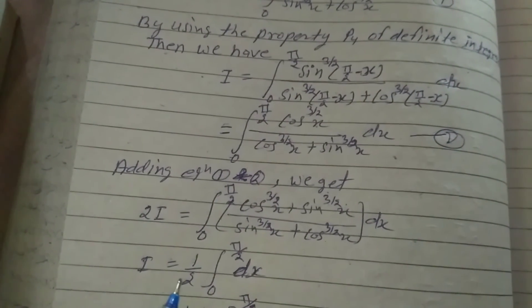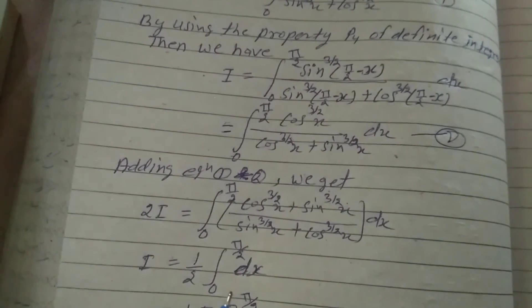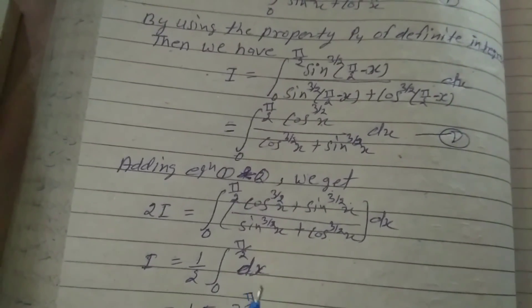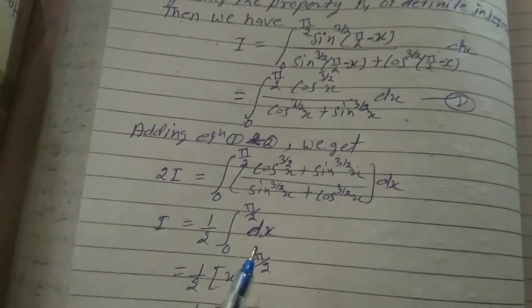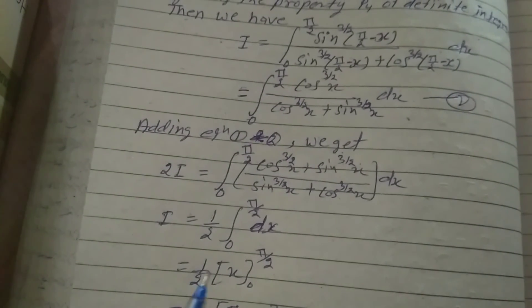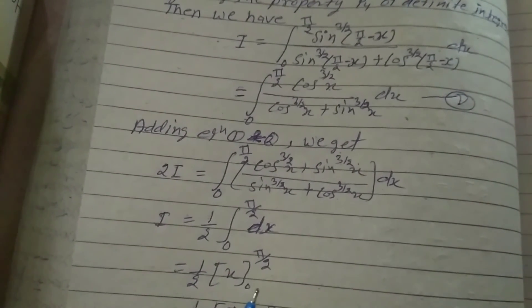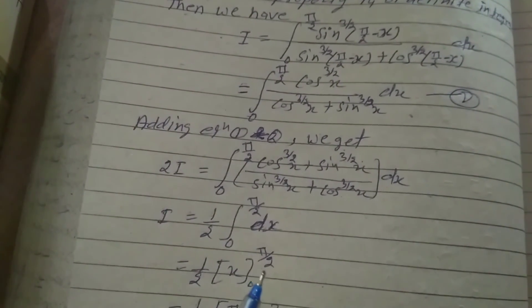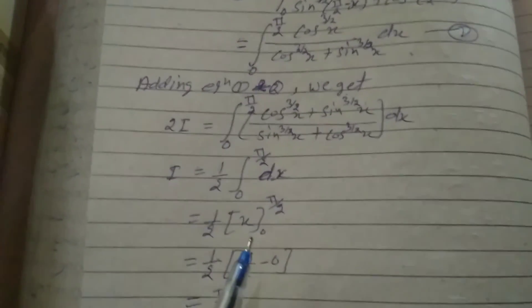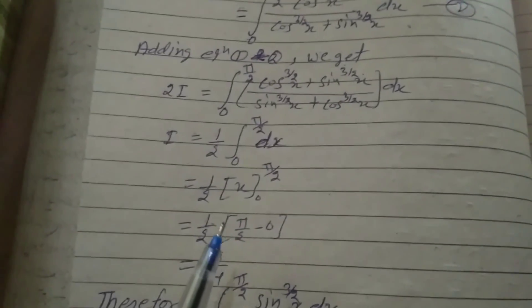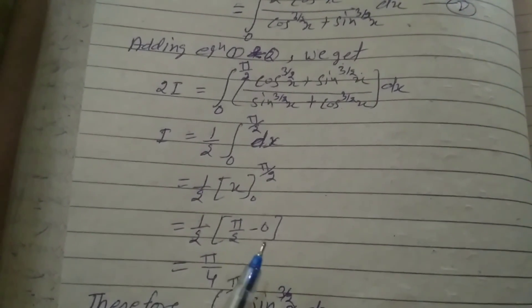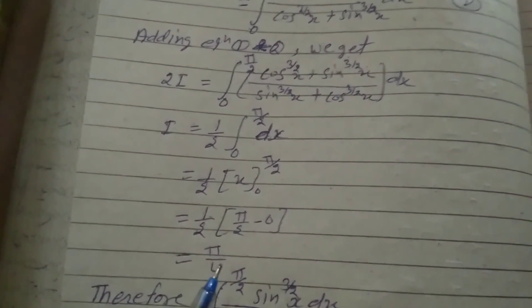Adding equation 1 and equation 2, we get 2I equal to the integral from 0 to π/2 of dx. The integral of dx is x, so 2I equals [x] from 0 to π/2. Applying the limits: 2I equals π/2 minus 0, so I equals π/4.